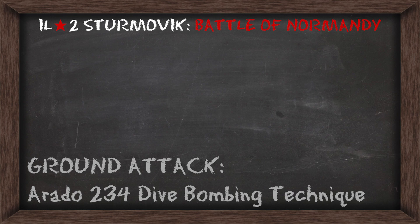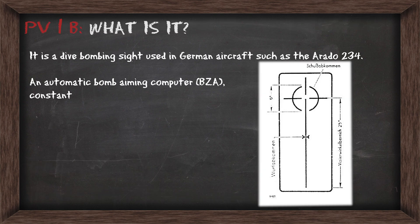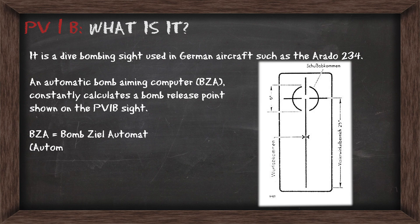Hello Virtual Pilots, it's Requiem. Today we're going to look at the PV-1B sight and how to dive bomb with it. It's a sight used in German aircraft such as the Arado 234, and it's connected to an automatic bomb aiming computer called a BZA, which constantly calculates the bomb release point shown on the sight itself.